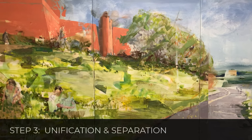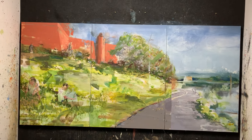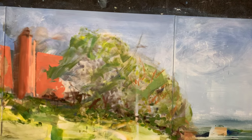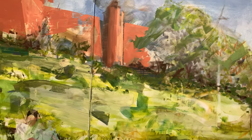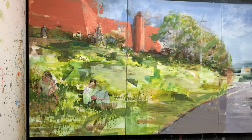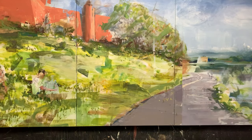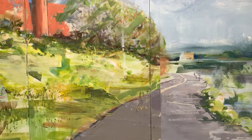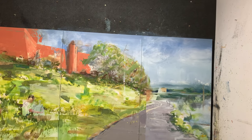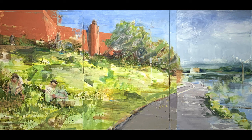In step three — unification and separation — we're basically using color, value, edges, shapes, and paint application to unify different areas of the composition and at the same time create separations. In my process this is a lengthy process where I spend multiple sessions developing the painting. Color is a big unifier. I'll often bring colors of dominant features like the sky into other areas of the painting — so there's some blue in the trees and the figures — and that creates a connection. Same goes with the red of the castle, which is used in other areas to create harmony. And here's the finished painting.